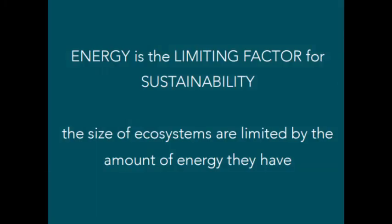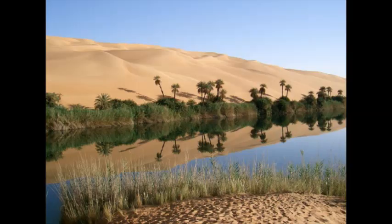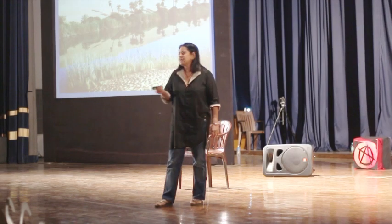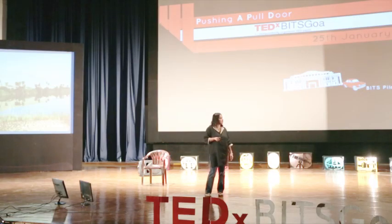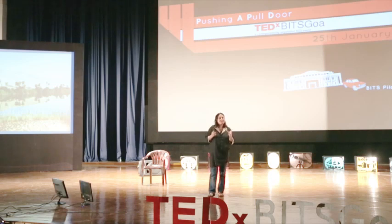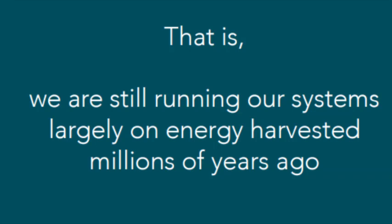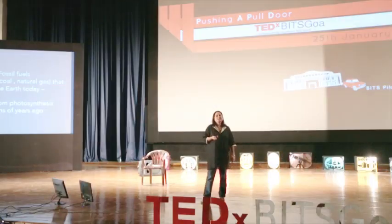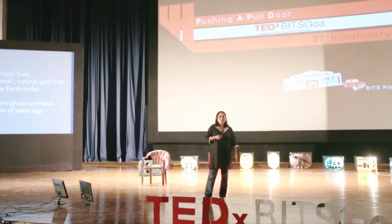The lesson is that energy is the limiting factor for sustainability. You only have growth where you can harvest sunlight — once started it creates its own water and condensation. The size of an ecosystem is dependent on the energy it can harvest. As humans, we are busy living off energy harvested millions of years ago and have wasted the energy we have on this earth for a long time.